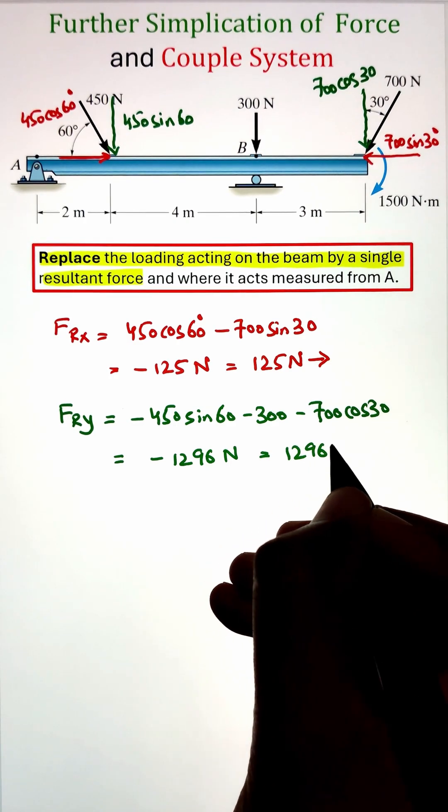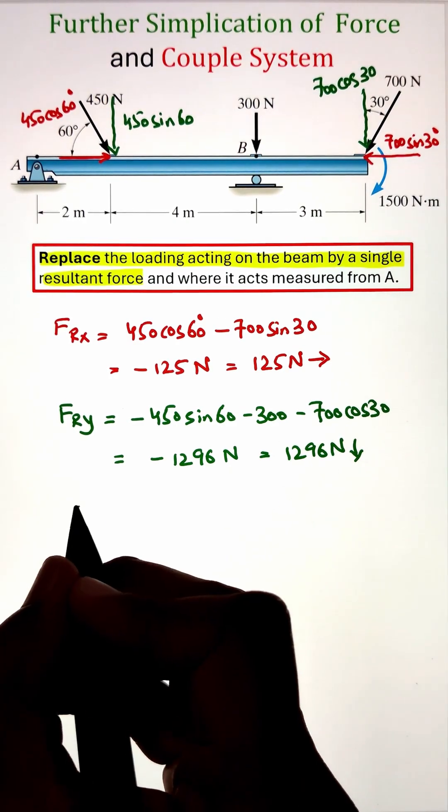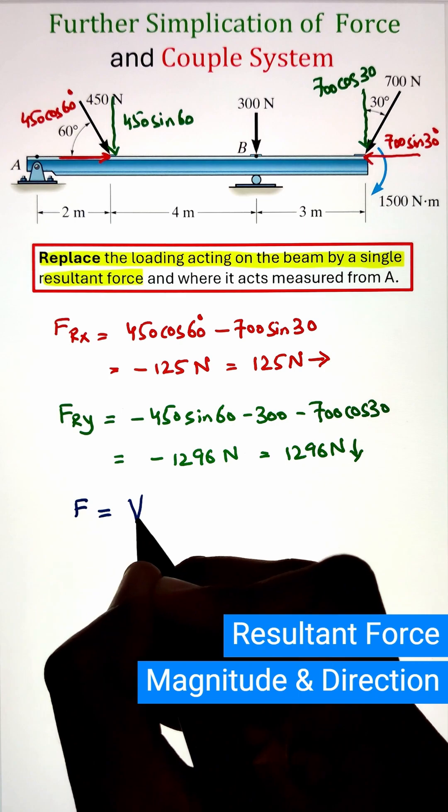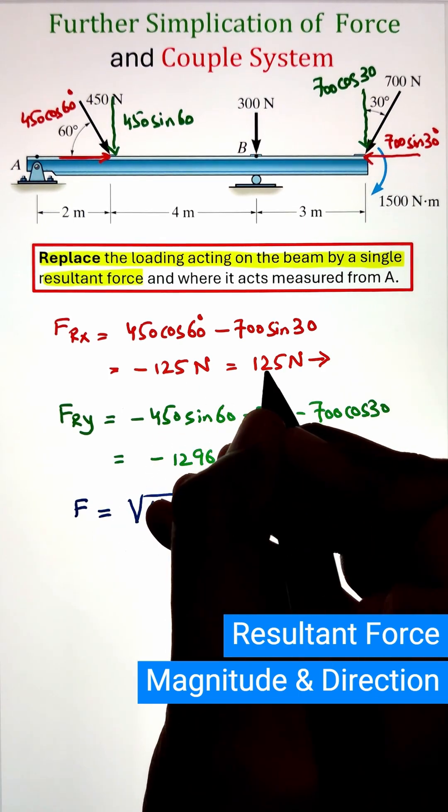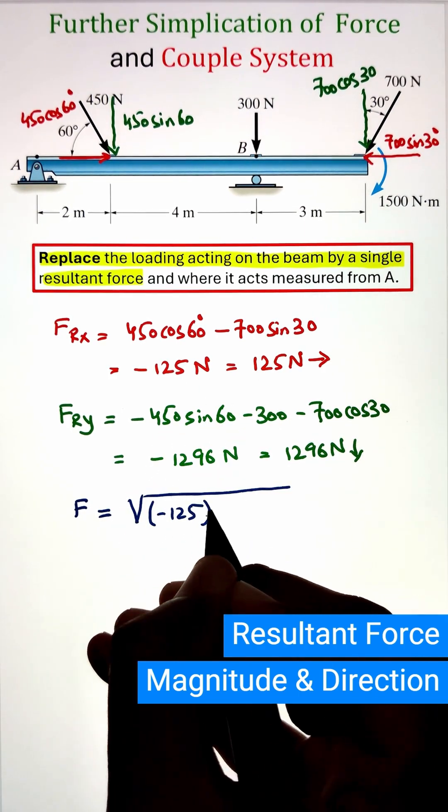Next we can calculate the resultant force by using the magnitude formula that is the square root of x component squared plus y component squared. This gives us the resultant force magnitude as 1302 newton.